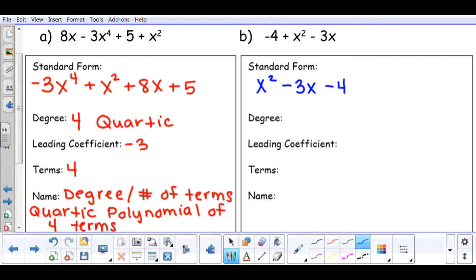My degree for this expression is an exponent of 2, which would make it quadratic. My leading coefficient in front of that x² term is a 1. I am having 3 terms in my expression. And when I name this, it's the degree by the number of terms. So since I had 3 terms, that would make it a trinomial. So the whole name would be a quadratic trinomial.